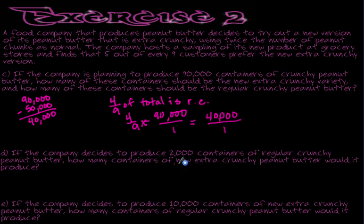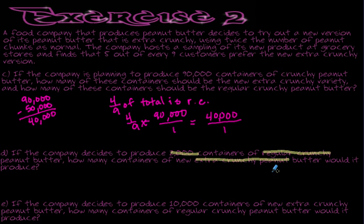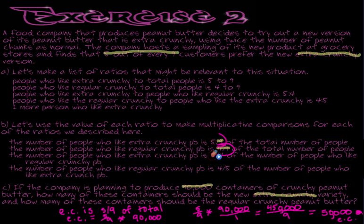This next one is a little bit harder. If the company decides to produce 2,000 containers of regular crunchy peanut butter, how many containers of extra crunchy peanut butter would it produce? We're now using the values for regular crunchy and extra crunchy — not the total — so it's a little harder because I have two options. I know that 2,000 is the number of regular crunchy. So I need to identify which value to use. The number of extra crunchy peanut butter is 5 fourths of the number of regular crunchy. Down here, regular crunchy is 4 fifths of the number of extra crunchy.